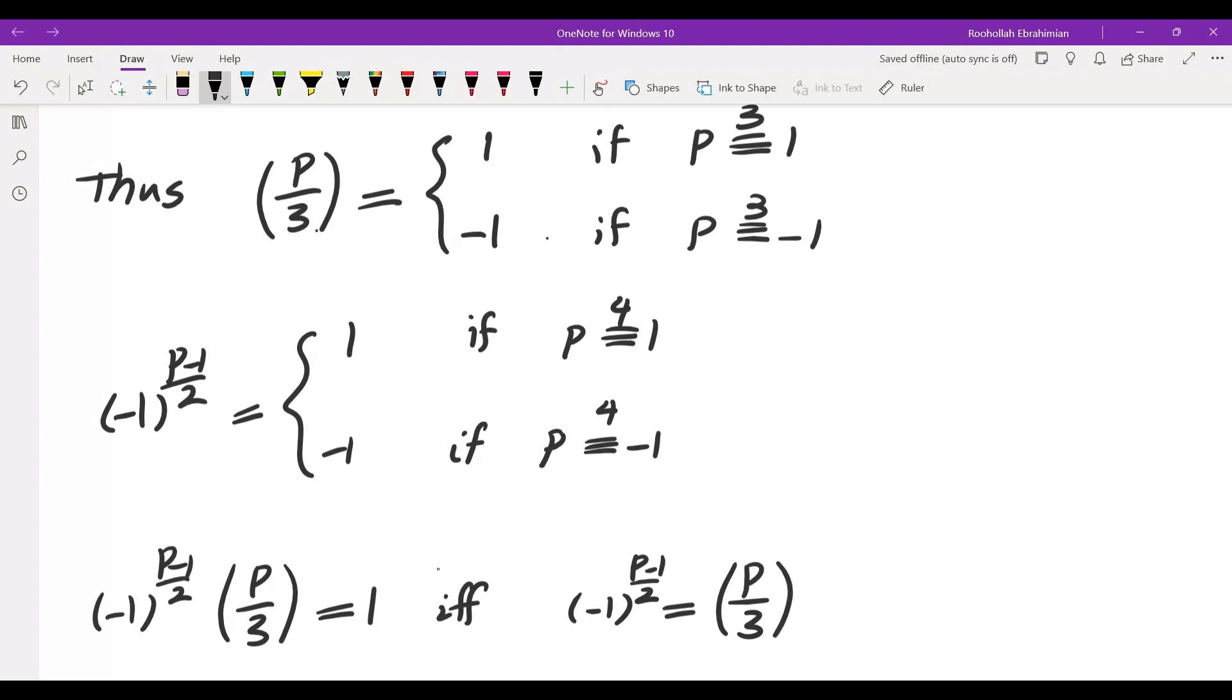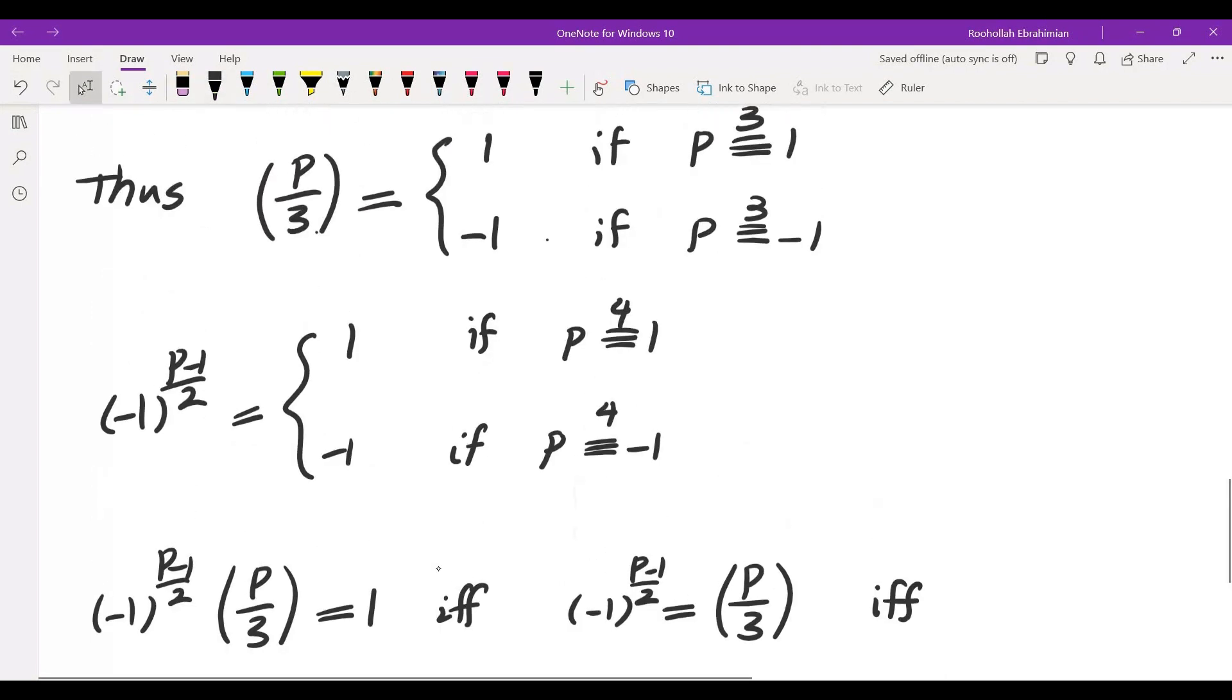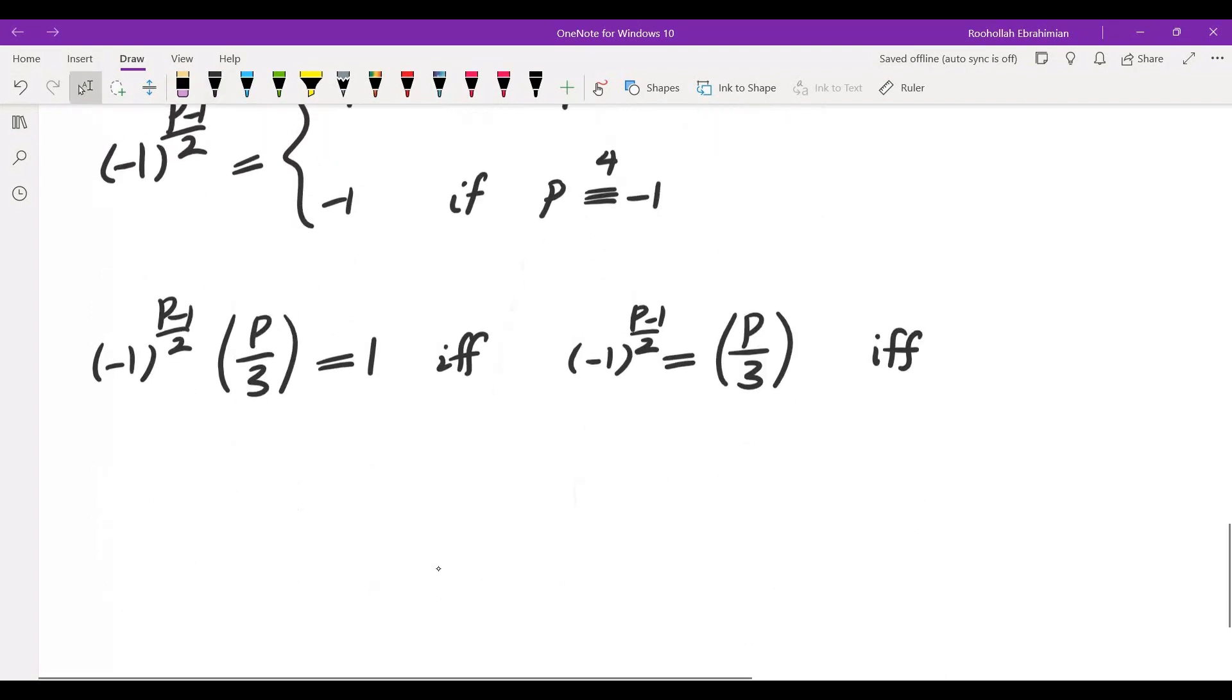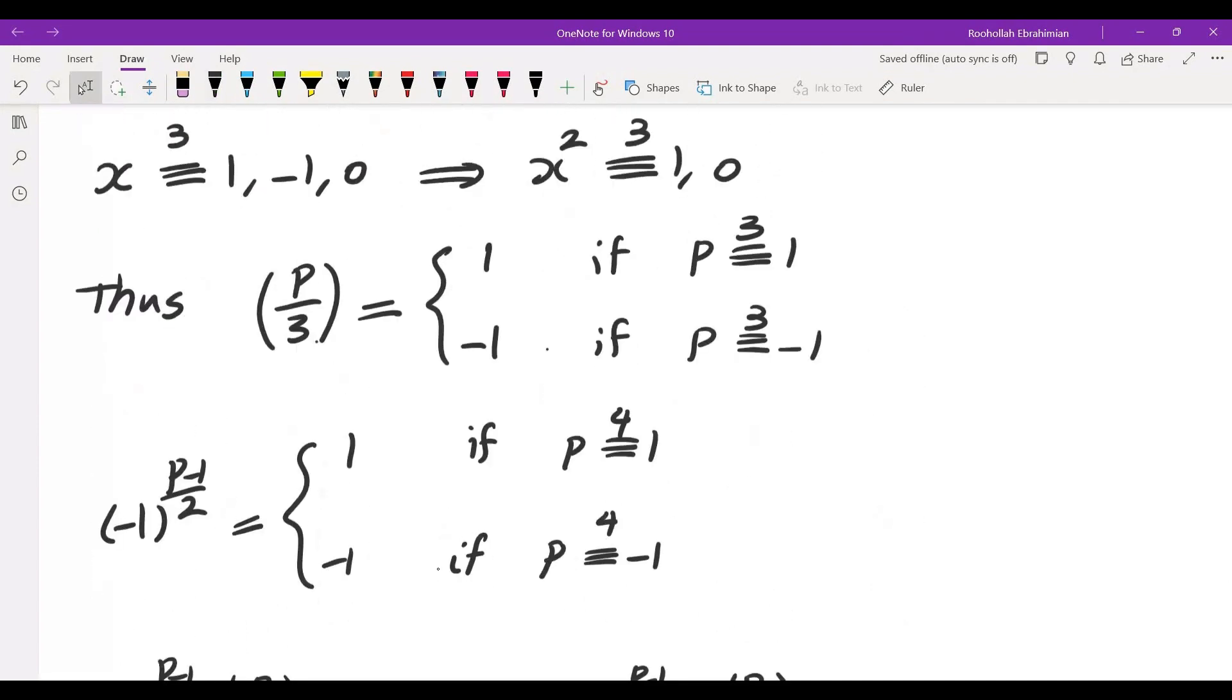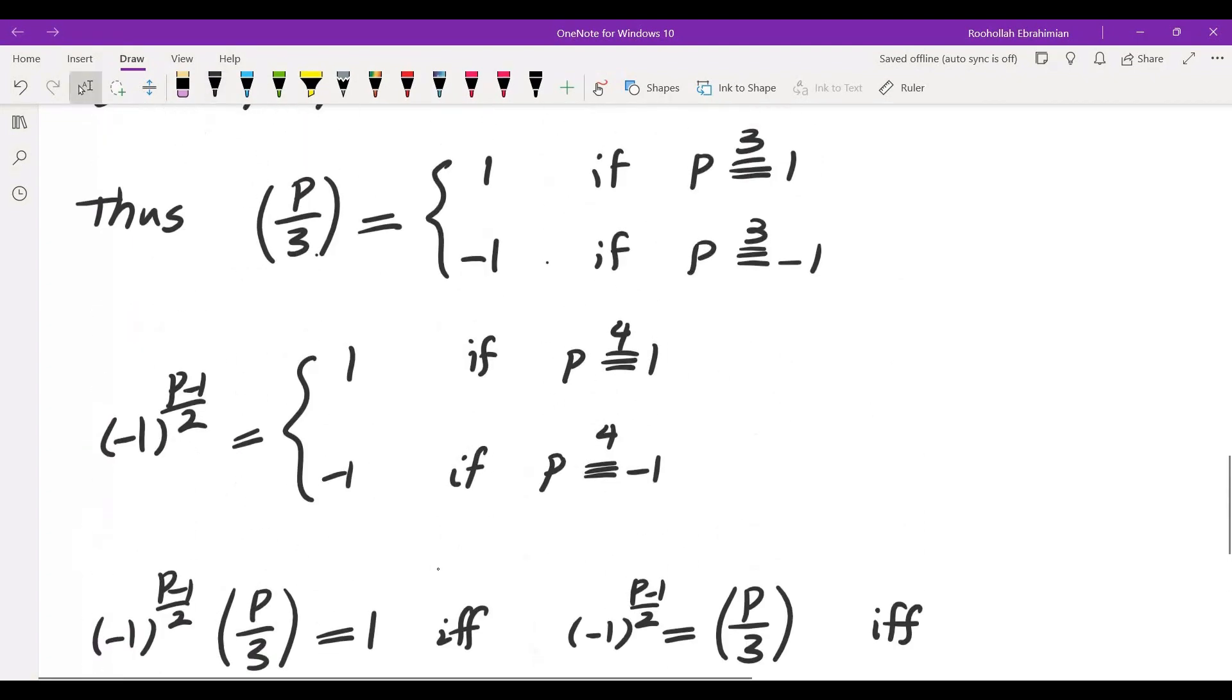So they are either both 1 or they're both negative 1. And this is the case if either we have the first case if P is 1 mod 3 and 1 mod 4 which means P is 1 mod 12, or P is negative 1 mod 3 and negative 1 mod 4.